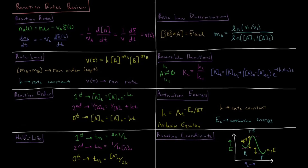We can also define half-life, which is the time necessary to go from a reactant at a given concentration to half that concentration. For first order reactions, the half-life is constant: the natural log of 2 divided by the rate constant. For second order, it's 1 over the rate constant times the initial concentration. For zeroth order, it's the initial concentration divided by 2 times the rate constant.